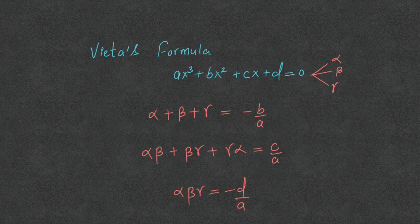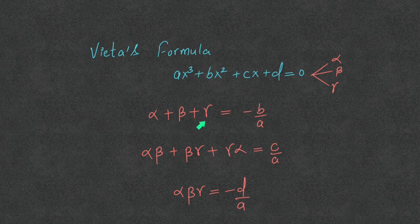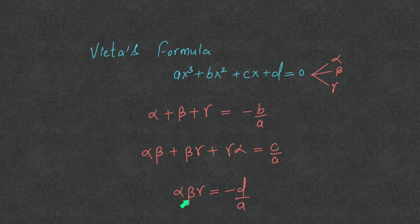According to Vieta's formulas for a cubic equation ax³ + bx² + cx + d = 0, if α, β, γ are the roots, then the sum of roots α + β + γ equals -b/a. The sum taken two at a time, αβ + βγ + γα, equals c/a, and the product of roots α·β·γ equals -d/a.